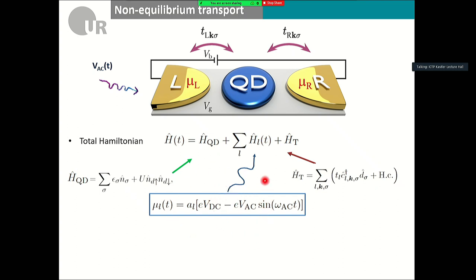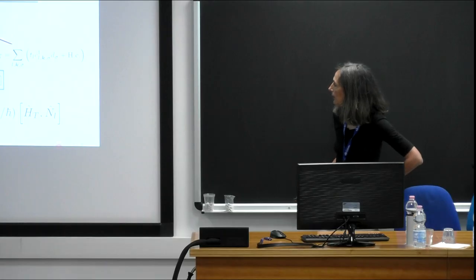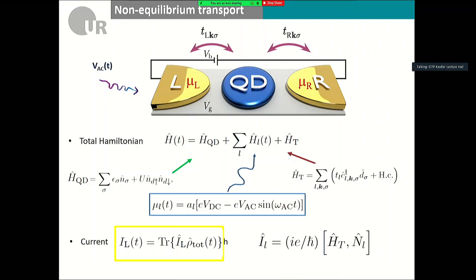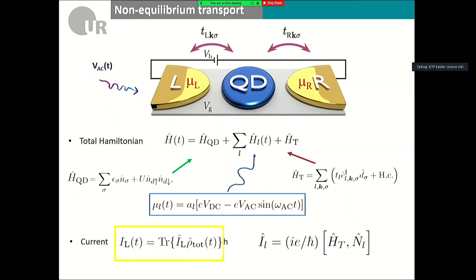On top of this, we apply a chemical potential with both a DC and AC component. The current operator is defined accordingly, and the current is obtained as a trace of the current operator over the total density operator of the quantum dot. To calculate the transport characteristics we use not a Green's function method but a reduced density matrix formulation, well known from quantum optics — this is a problem of quantum dissipation in fermionic environments.